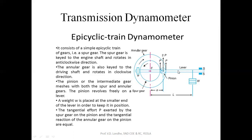For the epicyclic gear train dynamometer, you can utilize the power which has been transmitted through the pinion to the annular gear system. The difference of the product of the load into the distance from the central point gives the torque, and in this way the brake power for the epicyclic gear train type of dynamometer is calculated.